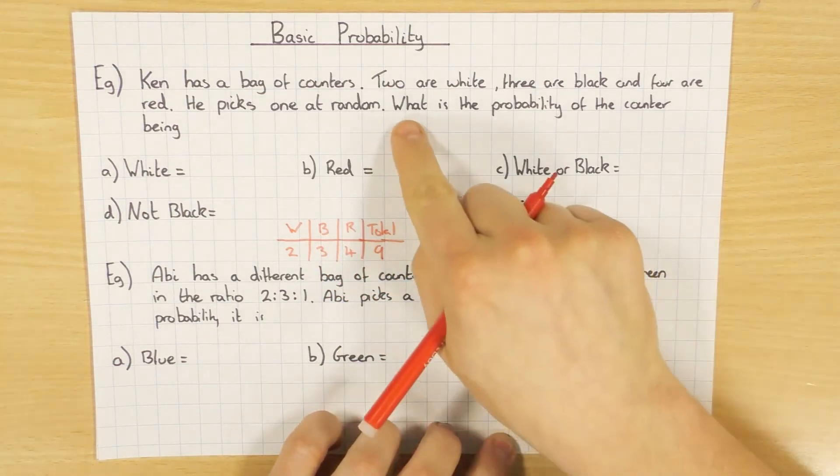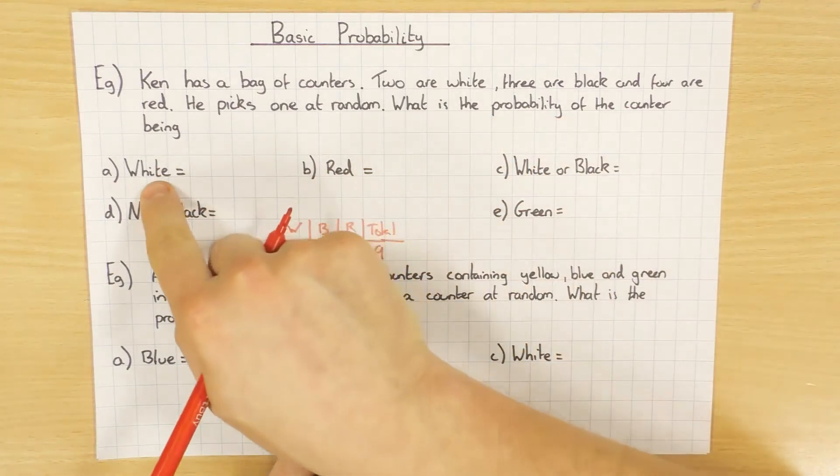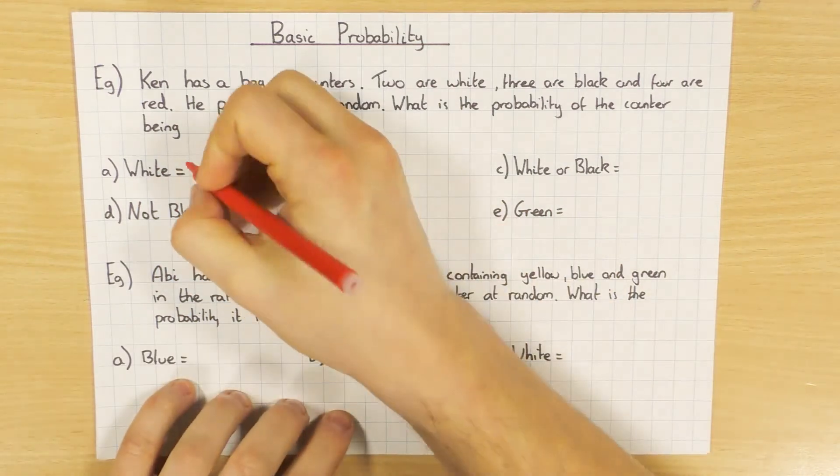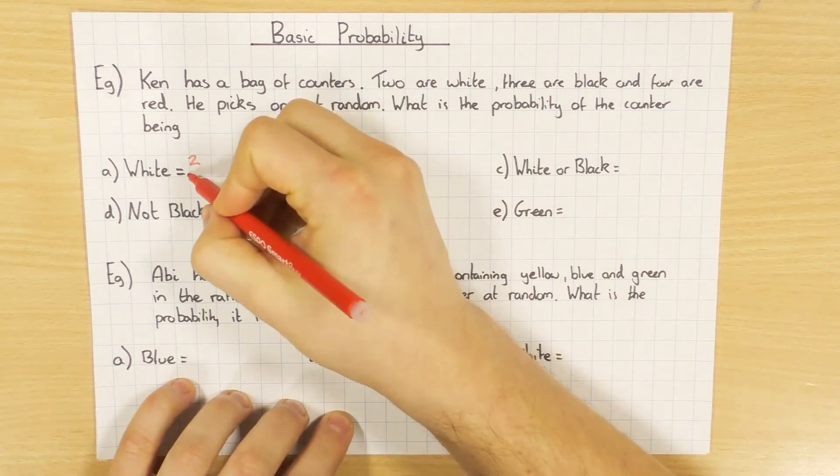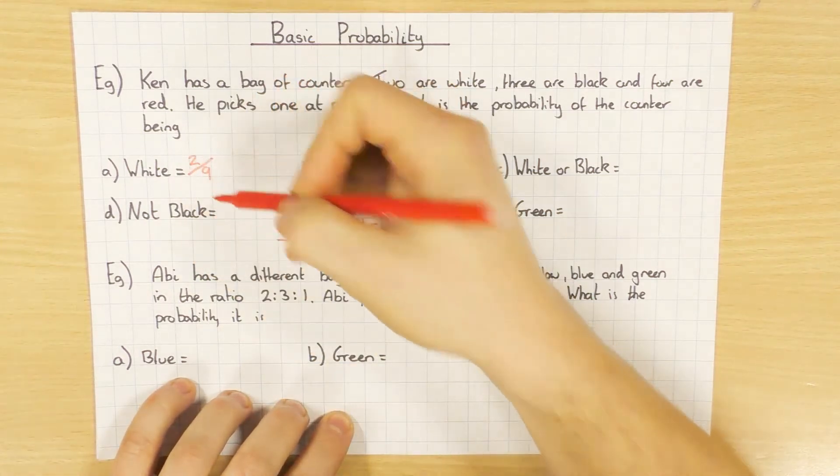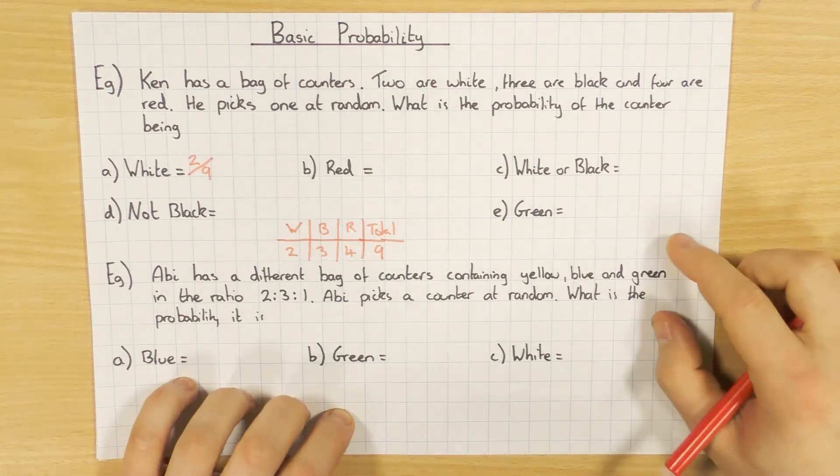Let's have a look at the question then. So what is the probability of the counter being white? Well, how many are white? It's two. So two are white, and then it's always out of the total, which is nine. So it's two out of nine. That's the probability. Leave it as a fraction, because it's nice and easy.